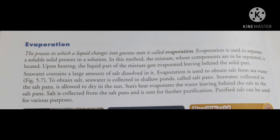Seawater contains a large amount of salt dissolved in it. Evaporation is used to obtain salt from seawater. Seawater is collected in shallow ponds called salt pans and is allowed to dry in the sun. The sun's heat evaporates the water, leaving behind the salt in the salt pan. The salt is then collected and sent for further purification.